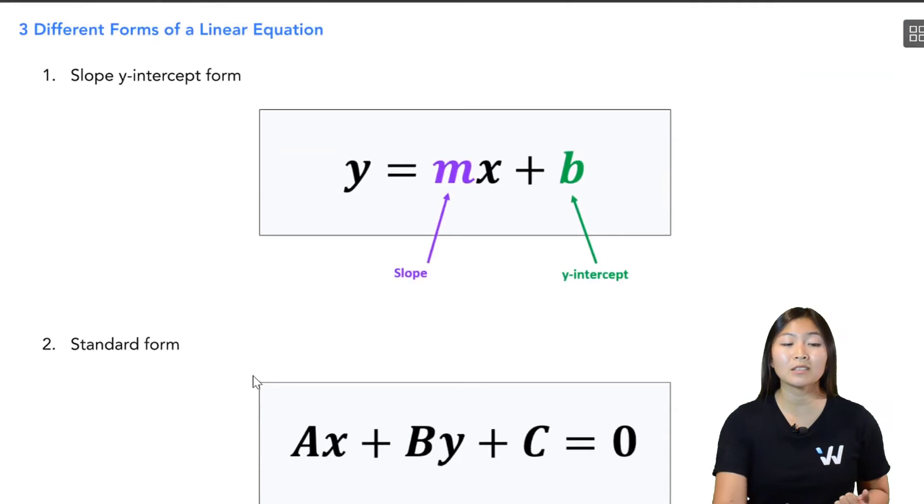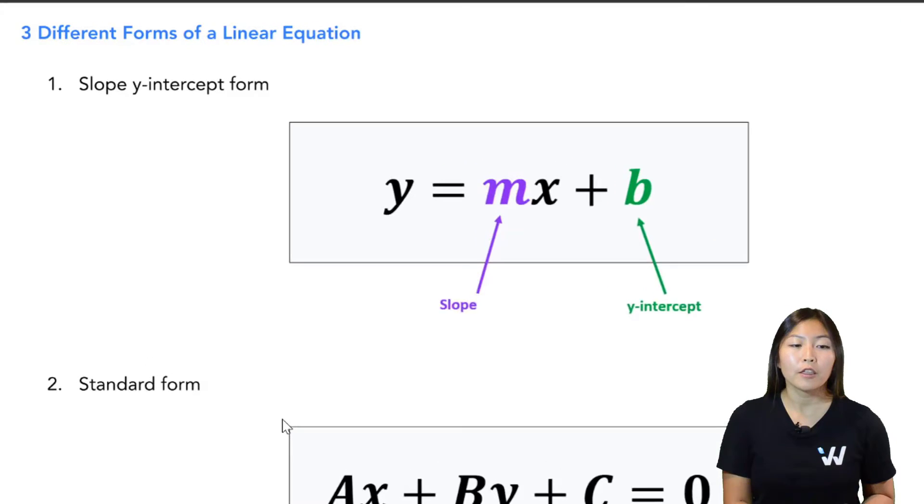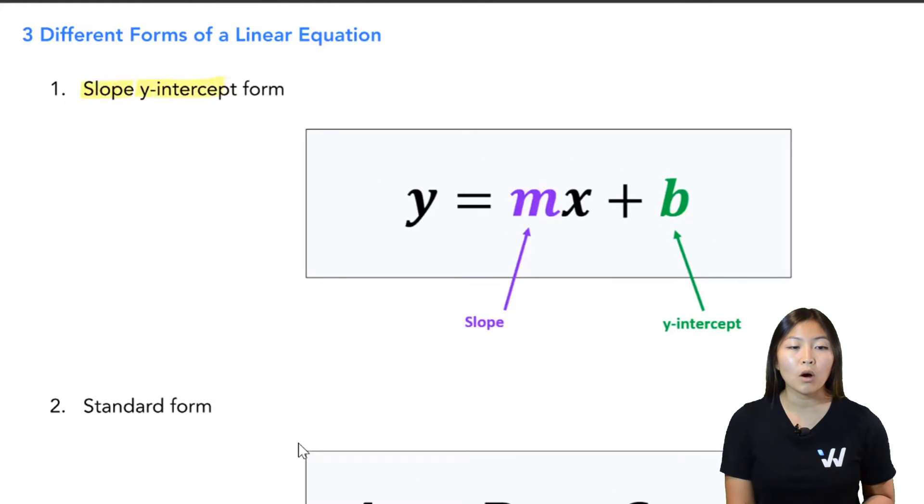The first one is called the slope y-intercept form, and as the name suggests, this equation gives us the quickest way to find out what our slope and what our y-intercepts are. So this equation looks like this: y equals mx plus b. Some teachers might have called it y equals ax plus b, so these mean the exact same thing.